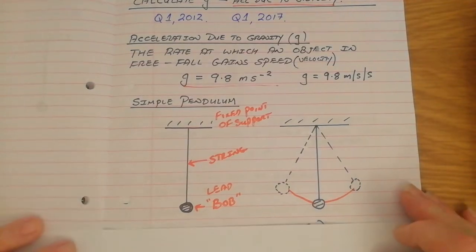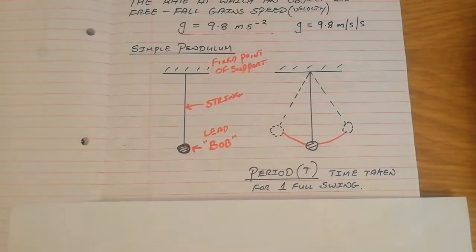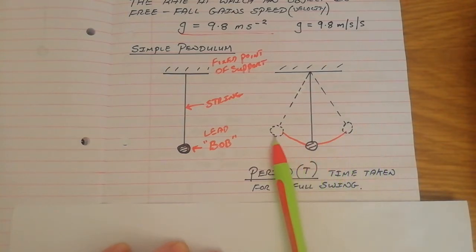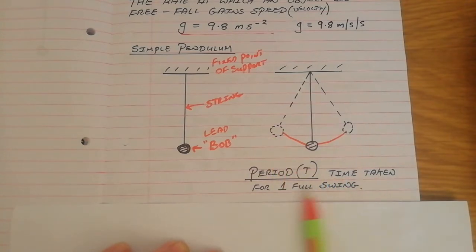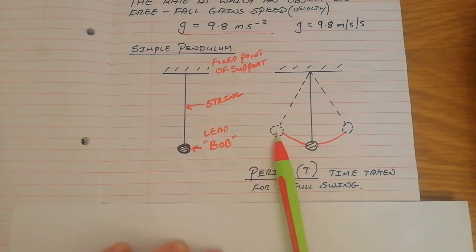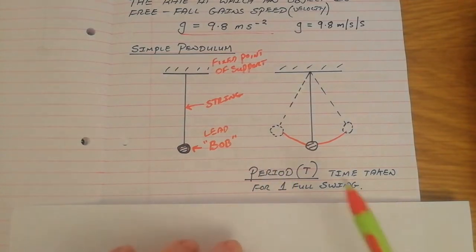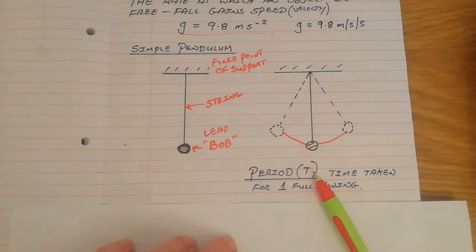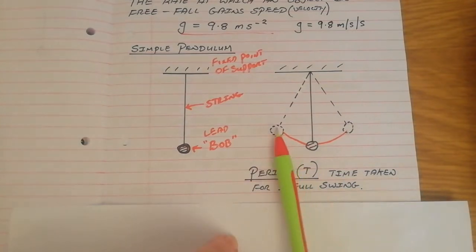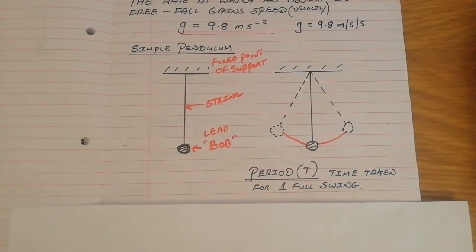What do we need to know about a simple pendulum? The period. The period is the time it takes to complete one full swing until it comes back to where it started — usually measured from the highest point on one side, over to the highest point on the other, and back again. That is the period, and the symbol is capital T. The period is the time taken for one full oscillation of the pendulum — that's a definition you need to know.